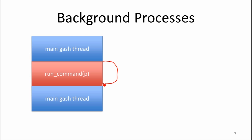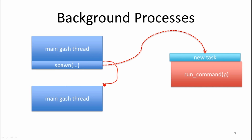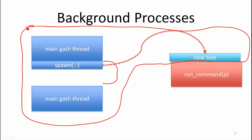We want the run command to happen in a different thread — we create a new task that does almost all the same things to create a foreground process, but does it in a new thread. This is all still our gash process; the new task is part of the same process but it's a new thread. After we've spawned it, the main thread keeps going — it prints the next command prompt and keeps running without having to wait for the background task to finish.